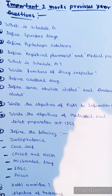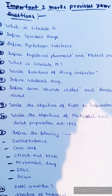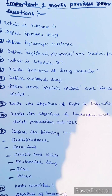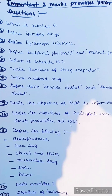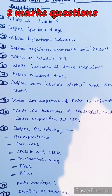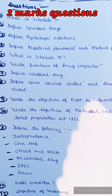Hello guys, welcome back to our channel. In this video we're going to study about the important two marks previous year questions in pharmaceutical jurisprudence. The first question is: what is Schedule G? Define previous drugs. Define psychotropic substance.